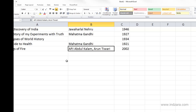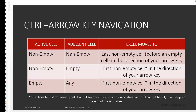To summarize: if your active cell is non-empty and the adjacent cell is also non-empty, Excel moves you to the last non-empty cell before an empty cell in the direction of your arrow key. If your active cell is non-empty and the adjacent cell is empty, Excel finds the first non-empty cell in that direction. If it reaches the end of the worksheet without finding one, it stops there. Finally, if your active cell is empty, Excel finds the first non-empty cell in the arrow key direction, stopping at the end of the spreadsheet if none is found.